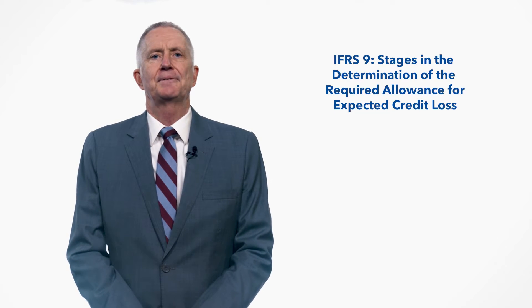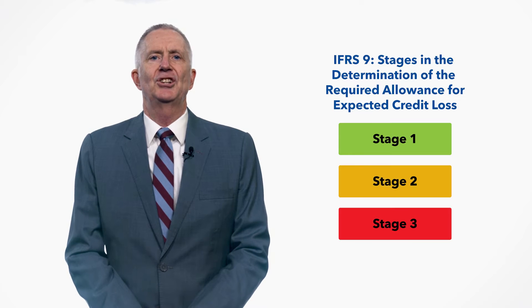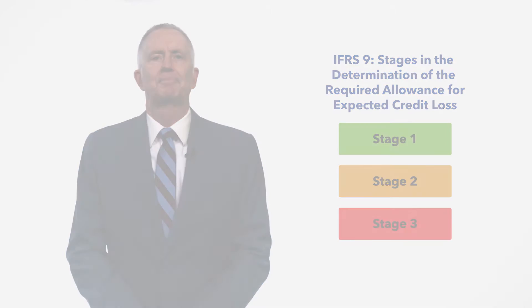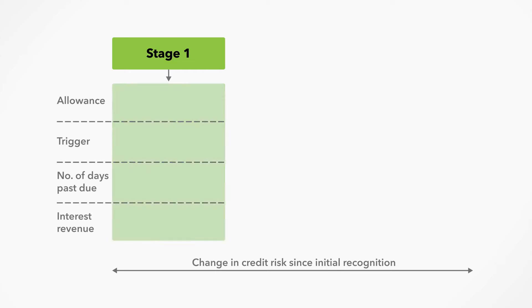IFRS 9 uses three stages in the determination of the required allowance for ECL. Loans are placed in stage 1 when initially advanced and remain there so long as there is no significant increase in credit risk.